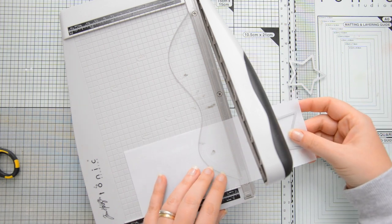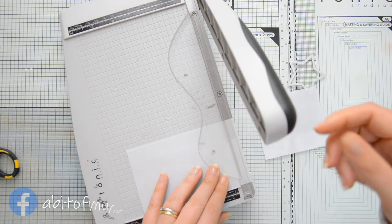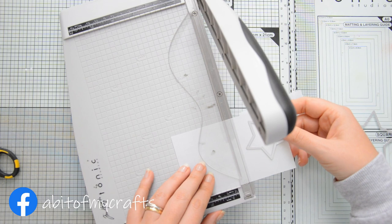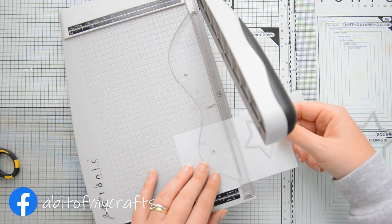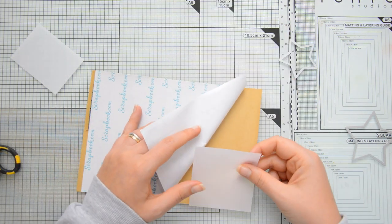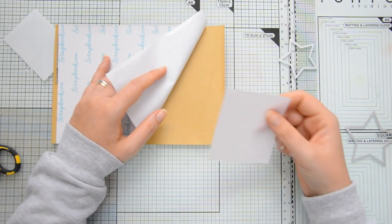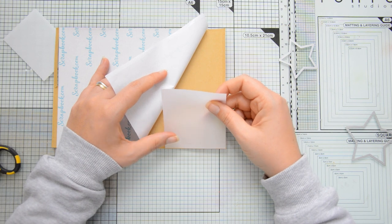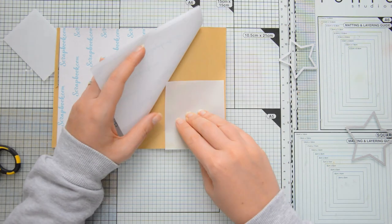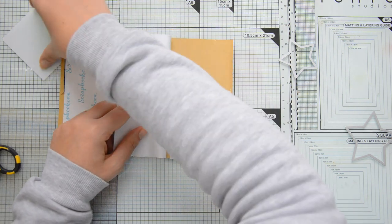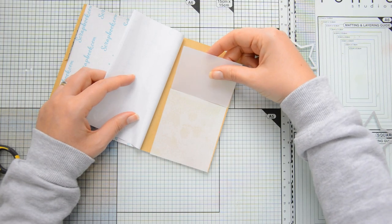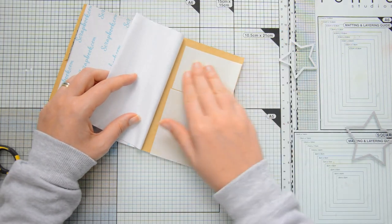And then I'm going to use some double-sided adhesive sheets. These are also by scrapbook.com to basically turn these die cuts into stickers. And the reason why I am basically turning these stars into stickers rather than adding glue to them is that this way no adhesive will show through and I can stick this directly on my card front and it will all look nice and neat.